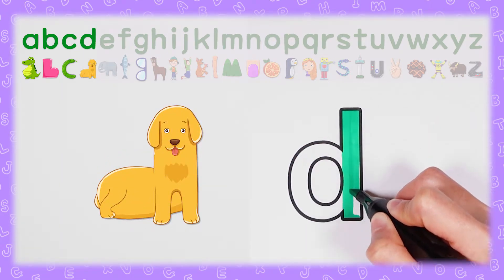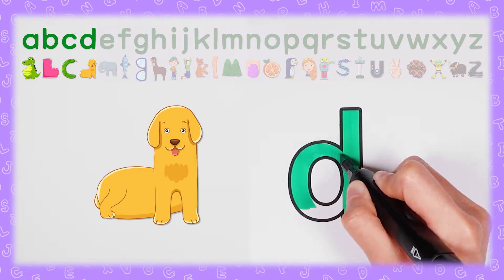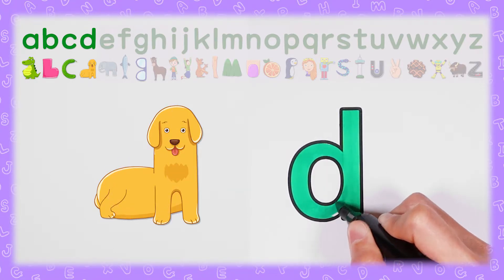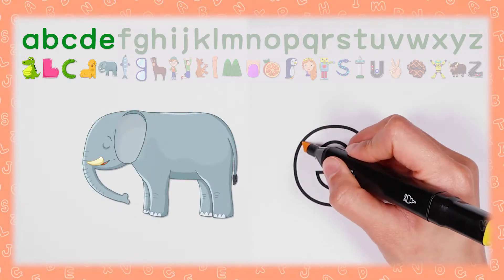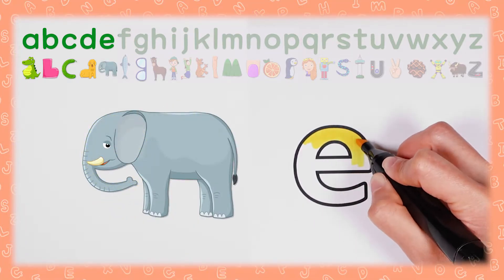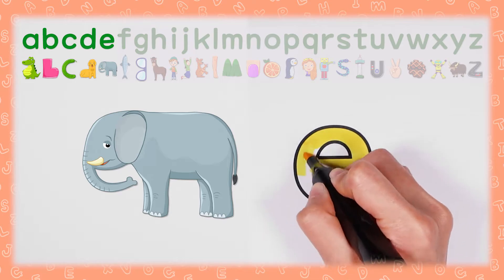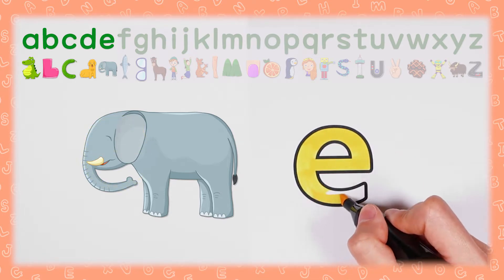D, 앉아있는 덕 D D (sitting duck). E, 둥근 코 엘레펀트 E E (elephant with round trunk)